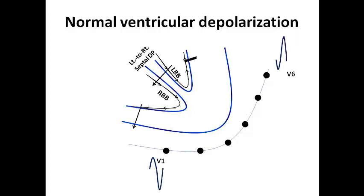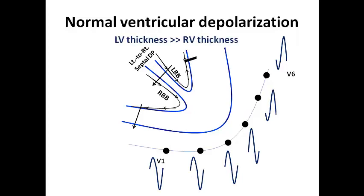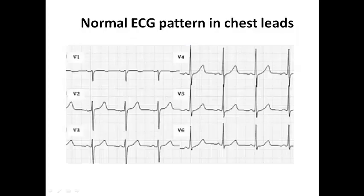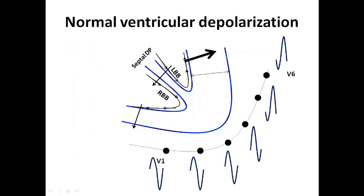Then ventricular depolarization takes place in the left and right ventricular free walls. Because the left ventricle has much larger thickness than the RV wall, left ventricular depolarization predominates right ventricular depolarization. This leads to a large negative deflection in V1 and a large positive deflection in V6, with V2 to V5 being midway between them. This explains the normal R-wave progression and the normal ECG pattern in chest leads.